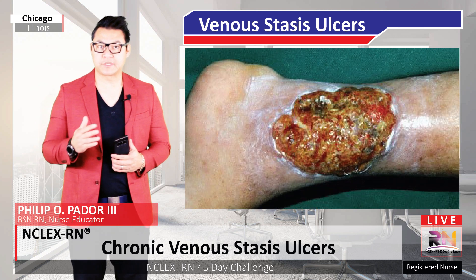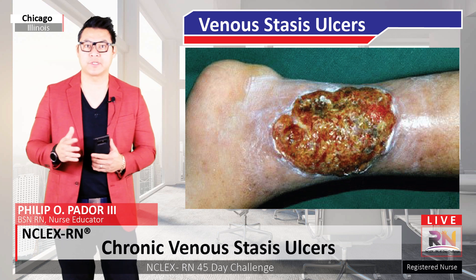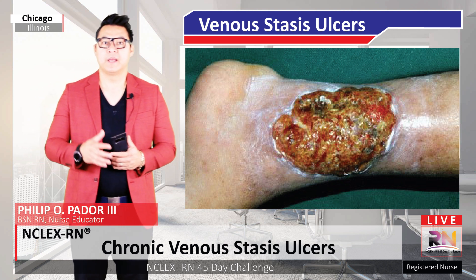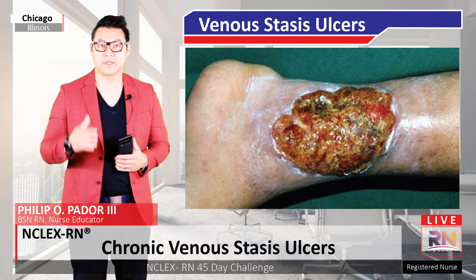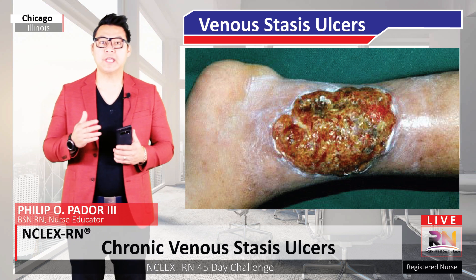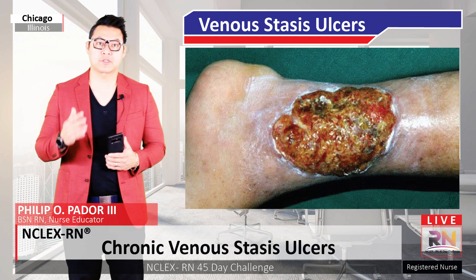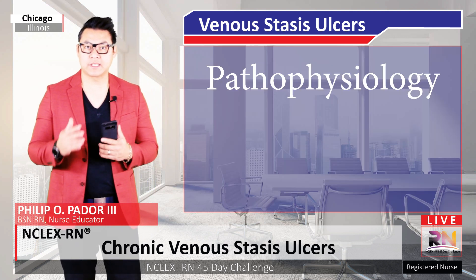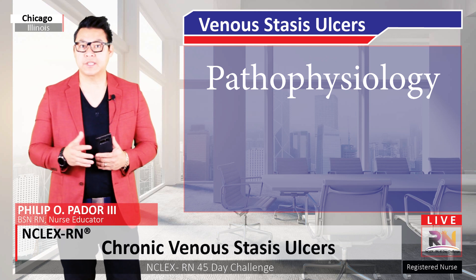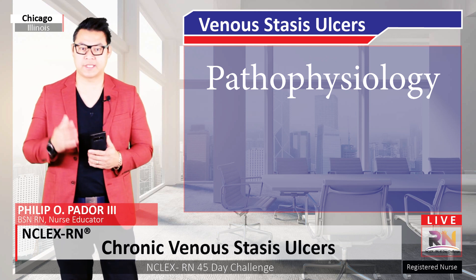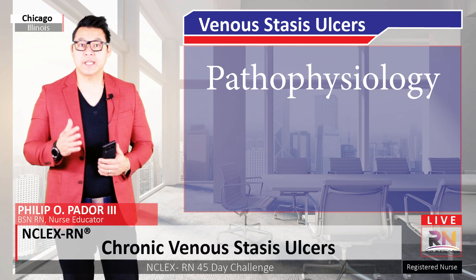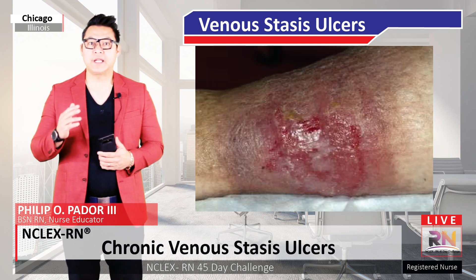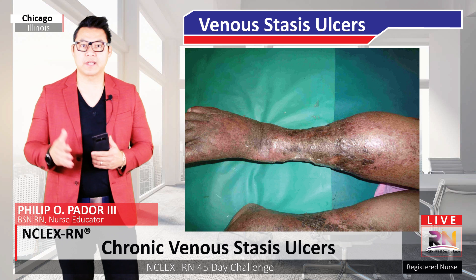Venous ulcers present themselves as shallow, painful ulcers located over the bony prominences, particularly the gaiter area or the ankle bone. Granulation tissue and fibrin are also present. One will most likely also be diagnosed with these associated findings in addition to chronic venous stasis. This includes edema, venous dermatitis, varicosities, and lipodermatosclerosis.